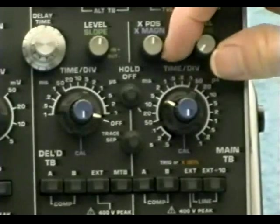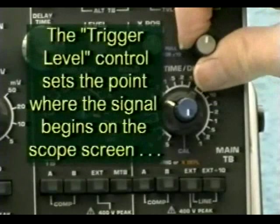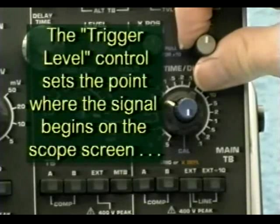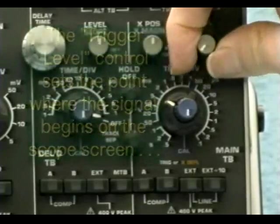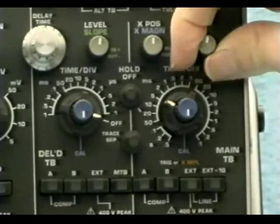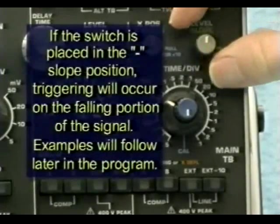By using the trigger level control in conjunction with the horizontal position control, you'll be able to carefully place the starting point of the trace at the point you need on the graticule of the oscilloscope. This is particularly important when making AC signal measurements. Additionally, you'll be able to use the oscilloscope's positive or negative slope select switch to determine whether you trigger on a leading or falling edge of a waveform.